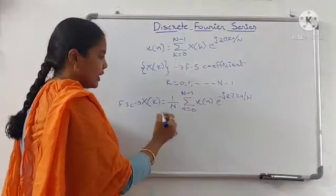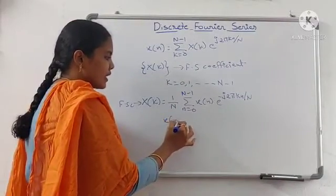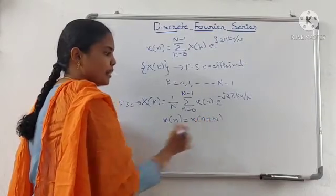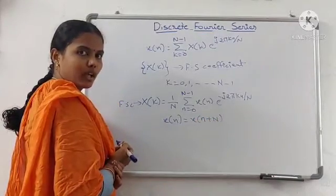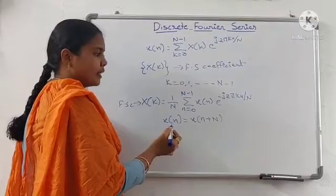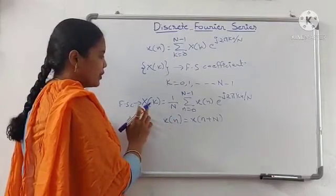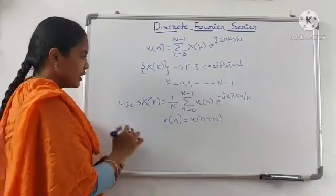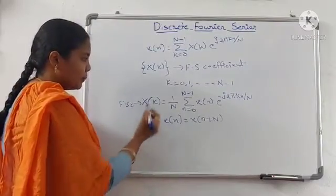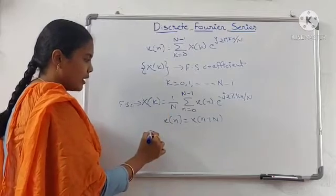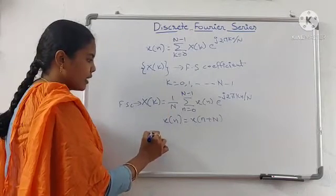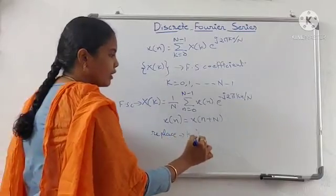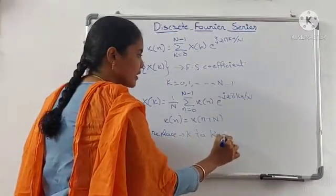We already know the condition for periodicity: x of n equals x of n plus capital N. We have to apply this periodic condition to the Fourier series coefficient. For that, in place of k, we write k plus N — that is, replace k with k plus N.